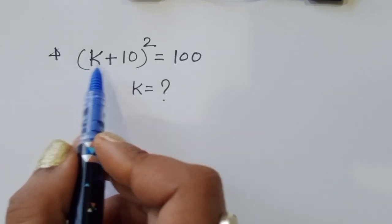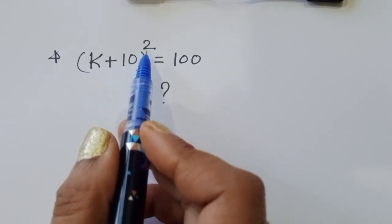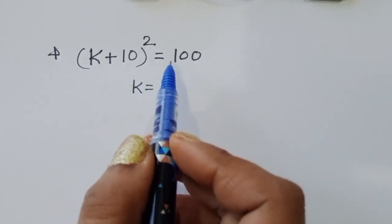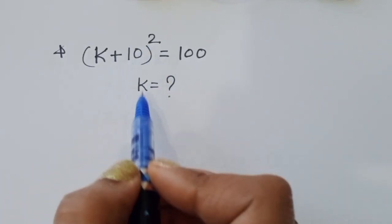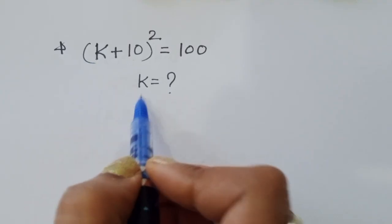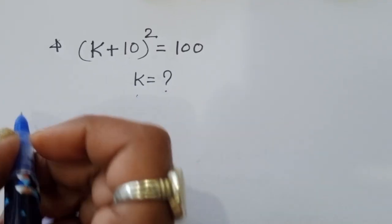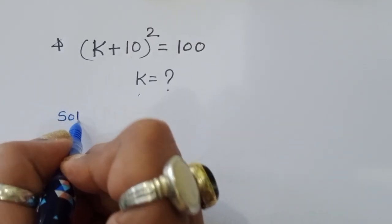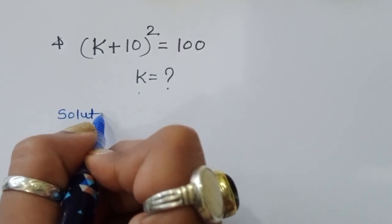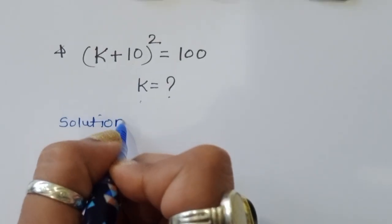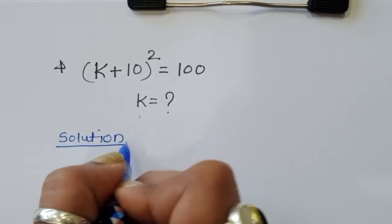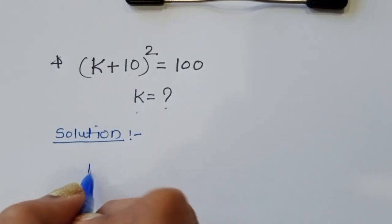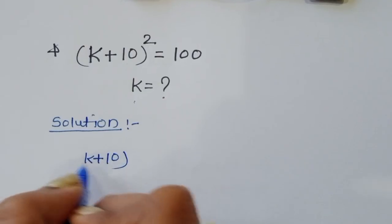The question is: (k + 10)² = 100. We have to find the value of k. Let's see the solution.